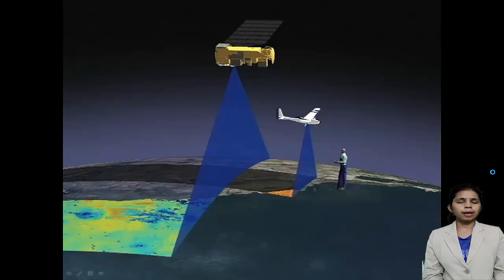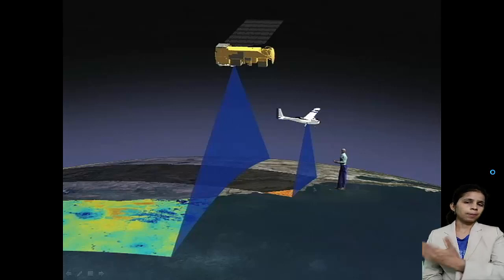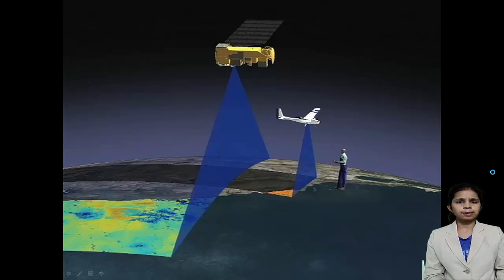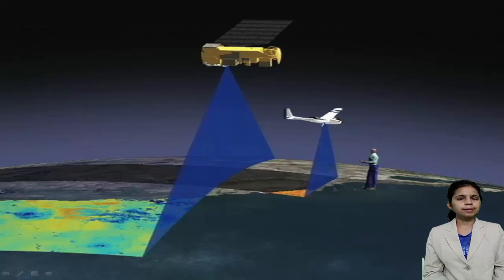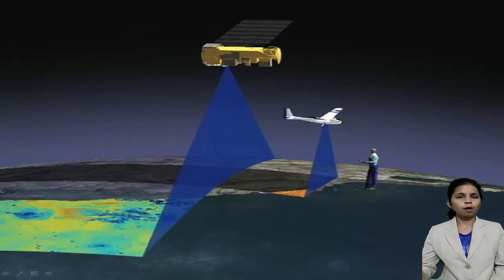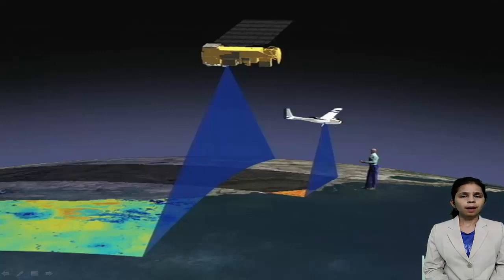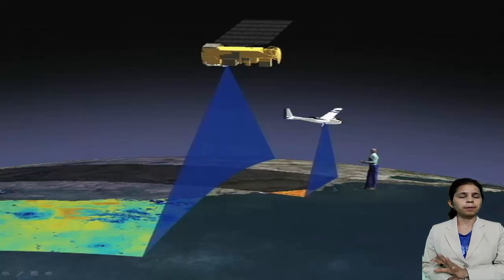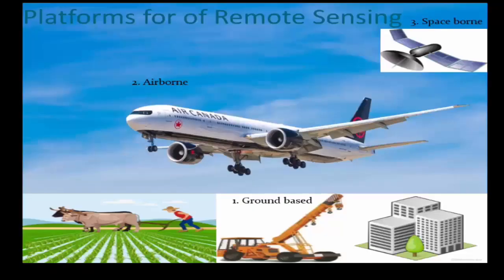To summarize the platforms: a person on the ground can see only a small area — that is ground-based platform remote sensing. With a sensor on an aeroplane, more area is visible, but cost increases. With a sensor on a satellite, a still larger area is covered, and the cost per unit area is less.